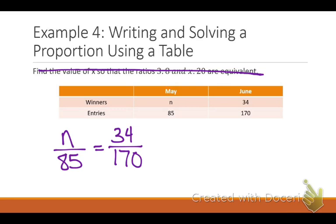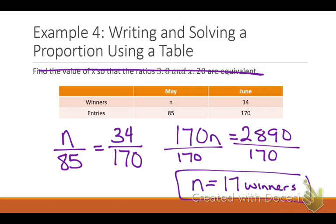I went N over 85 equals 34 over 170. I did cross-products. You could try to find the missing link, and there is one - it's actually a whole number - but there's not an obvious missing link. Just do cross-products. 170N equals 2890. What do I divide both sides by? 170, and I get my answer: 17. Don't forget to label: 17 winners in May based on the same proportion or ratio that happened in June. And that's everything you need to know for section 5.4.